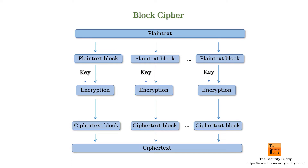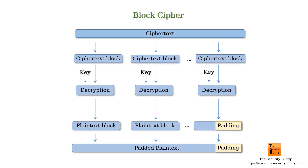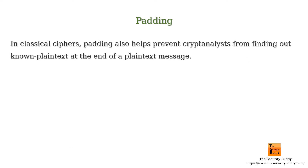In that case we need to pad the last block of plaintext. We first divide the plaintext into block length sized blocks and then we pad the last block. After that we encrypt each block of the padded plaintext and get ciphertext blocks. At the time of decryption we first decrypt each ciphertext block and get the padded plaintext. After that we remove the padding and get the actual plaintext. In classical ciphers, padding also helps prevent cryptanalysts from finding out known plaintext at the end of a plaintext message.